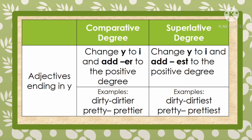For adjectives ending in -y, to form the comparative degree, change the y to i, then add -er. Examples: 'dirty' — drop the y, add -i-e-r, so 'dirty' becomes 'dirtier.' The second example is 'pretty' — drop the y, change to i, then add -er, so 'pretty' becomes 'prettier.'